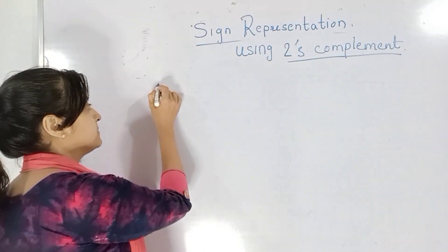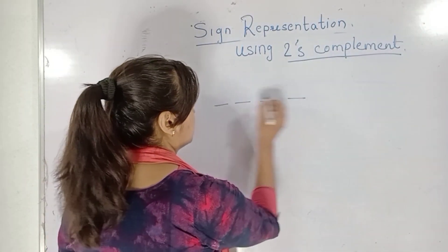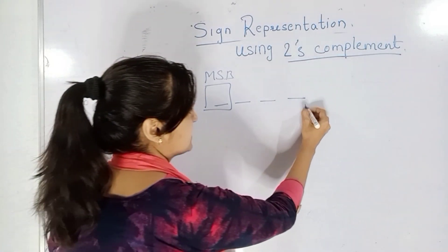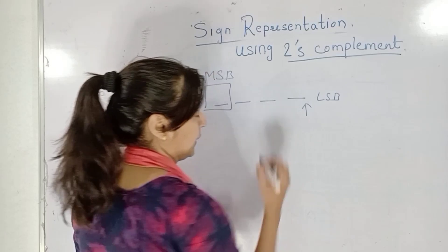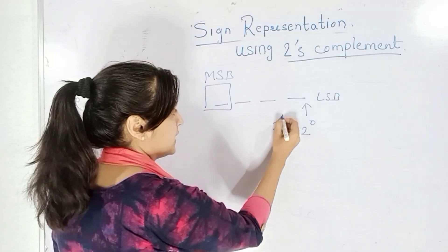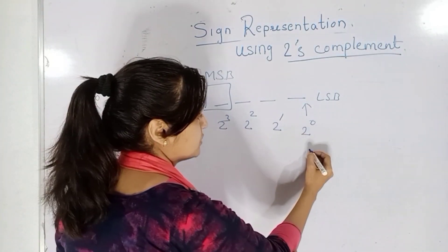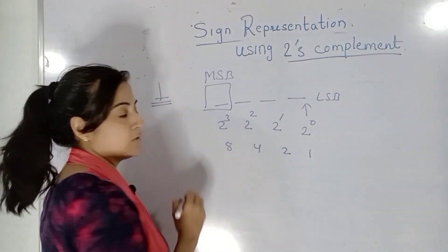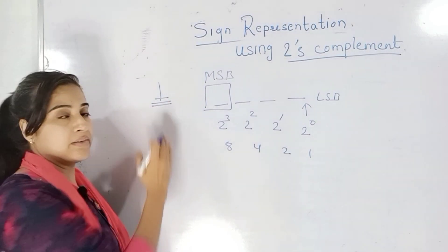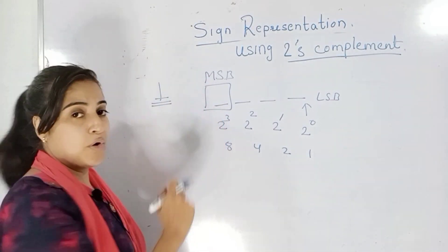The first part is how we can represent a signed number. In the binary number system, the leftmost bit is the MSB — that is, the most significant bit. The rightmost bit is the least significant bit, that is LSB, because it has a weight of 2 to the power 0. The next bit has weight 2 to the power 1, then 2 to the power 2, and if the number is 4 bits, the leftmost bit has weight 2 to the power 3. So in ascending powers of 2, the weight keeps increasing, and the leftmost bit has the highest weight — that's why it is treated as the MSB.